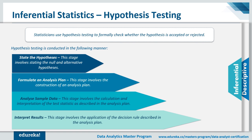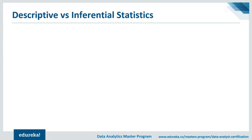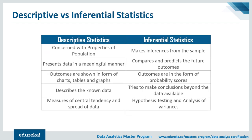The differences between descriptive and inferential statistics: descriptive is concerned with the properties of a population, while inferential makes inferences from samples. Descriptive presents data in a meaningful manner, while inferential compares and predicts future outcomes. Descriptive outcomes appear as charts, tables, and graphs; inferential outcomes are shown as probability scores. Descriptive describes known data; inferential tries to draw conclusions beyond available data. Descriptive has measures of central tendency and spread; inferential has hypothesis testing and ANOVA.